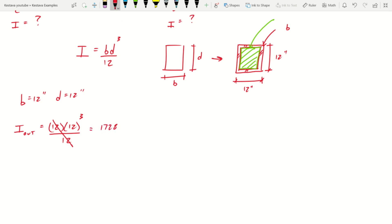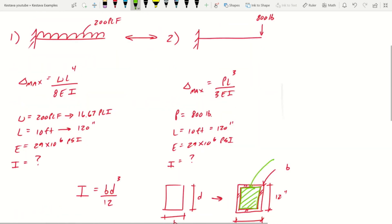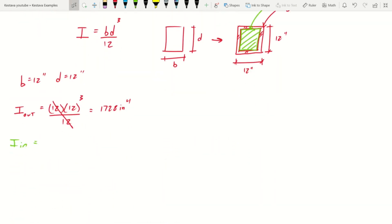Now we want I inner. If we scroll back up we see that we have a thickness of 0.25 inches. So that means that our b is equal to 11.5 inches and our d is also equal to 11.5 inches.